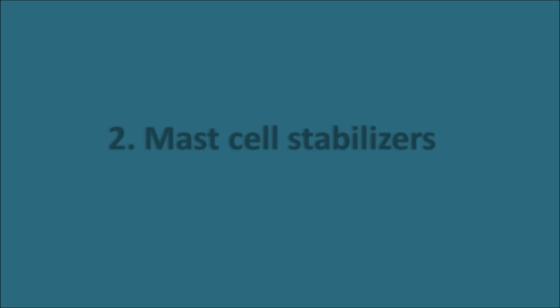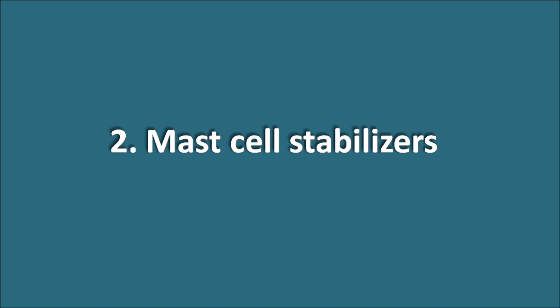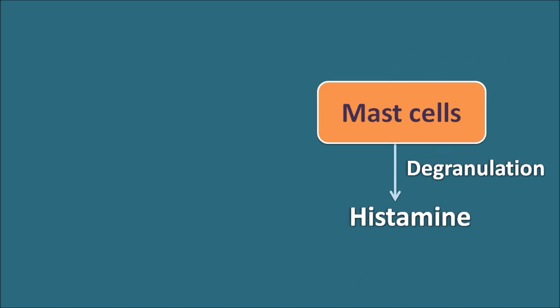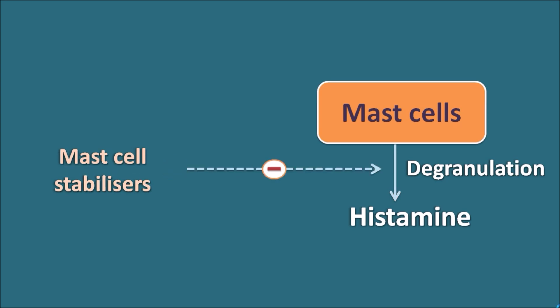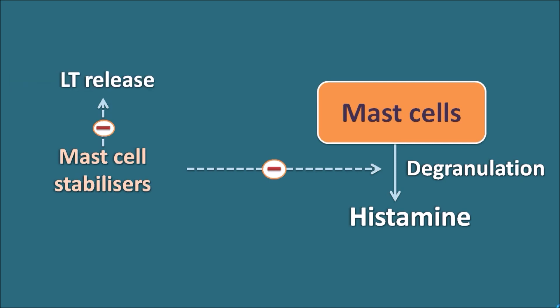The second type of medication is mast cell stabilizers. Mast cells degranulate to release histamine, a key inflammatory mediator. Mast cell stabilizers prevent mast cells from depolarizing and degranulating to release histamine. They also inhibit the release of another potent inflammatory mediator, leukotriene, thereby inhibiting the overall inflammatory response.